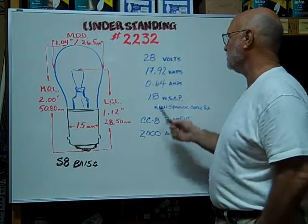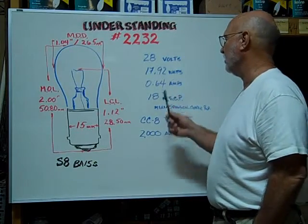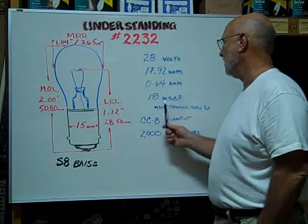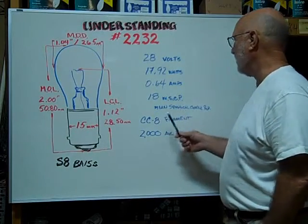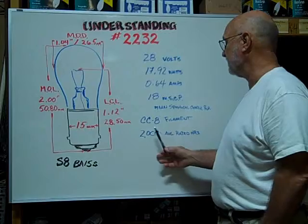It's rated at 28 volts. The watts are 17.92. Amps are rated at 0.64. The mean spherical candle power is 18. The filament type is a CC-8. The average rated hours are 2,000 hours.